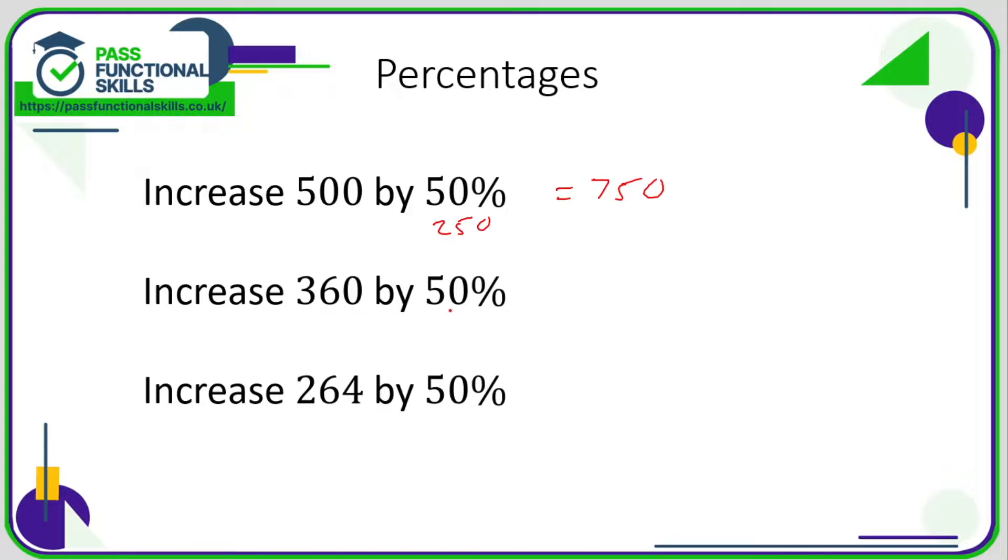Increase 360 by 50%. What is 50% of 360? 50% of 360 is 180. So I'm going to add 180 to 360. 8 plus 6 is 14, carry the 1, 3, 4, 5. So the answer is 540.